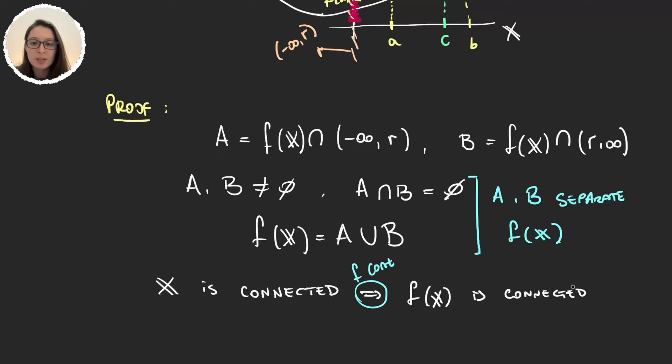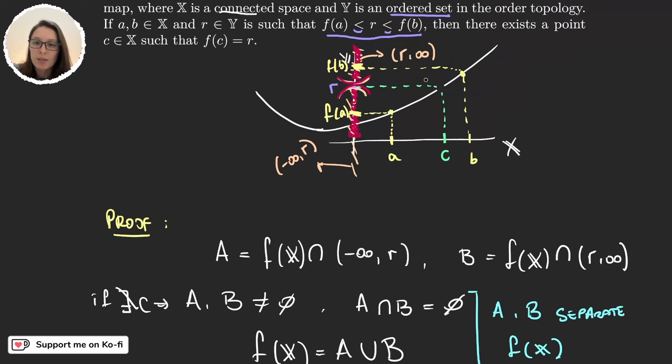And so f of x is connected, but I just found a separation. This gives us a contradiction, because we were supposing here that c did not exist. And so c must exist, and we have this here.